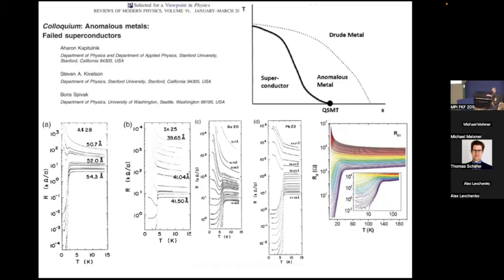But the nature of this anomalous metal phase is not completely understood. This plot is for one of the cuprates, so it's seen across the variety spectrum of different materials that exhibit this transition.